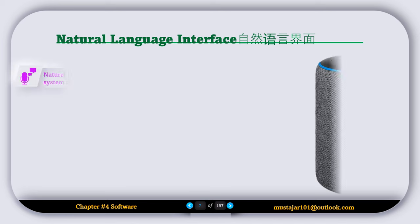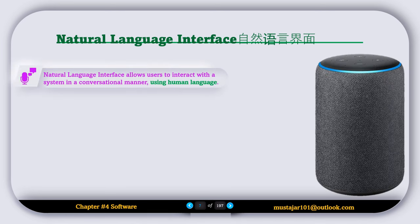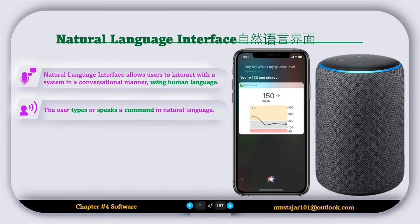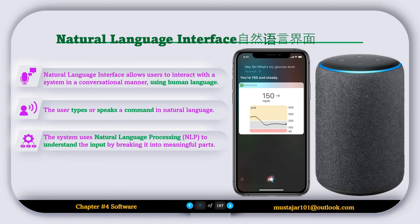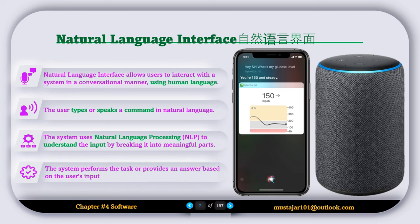The last interface is called NLI or natural language interface. This interface allows users to interact with the system in a conversational manner using human language like English. The user types or speaks a command in natural language. The system uses NLP to understand the input by breaking it into meaningful parts, then performs the task or provides an answer based on the user input.